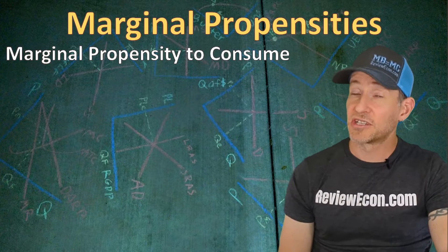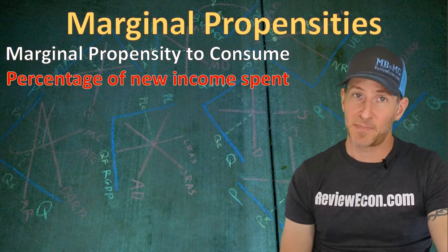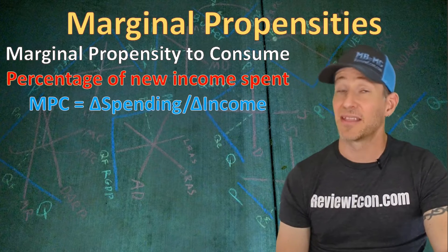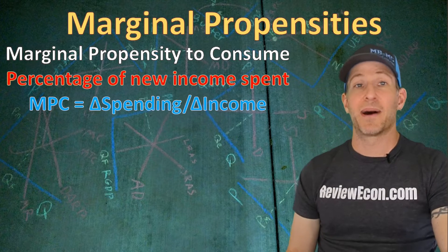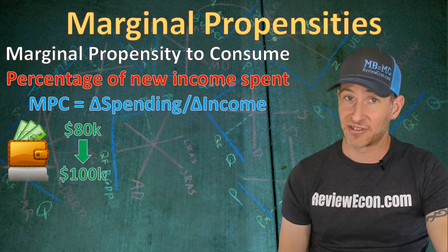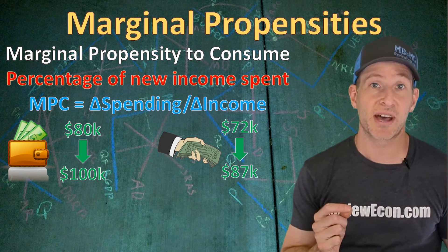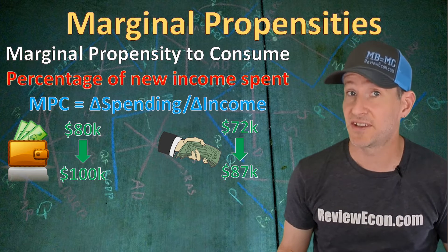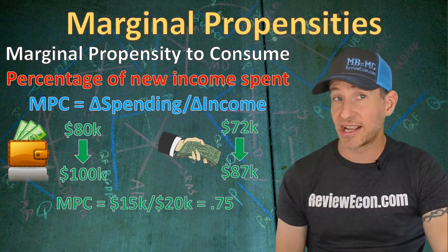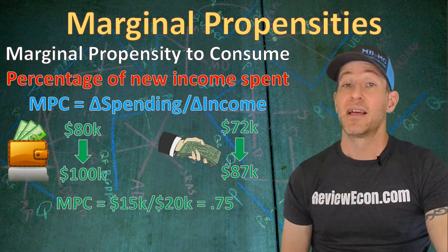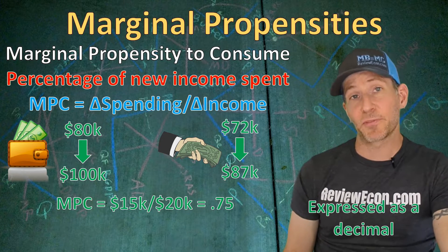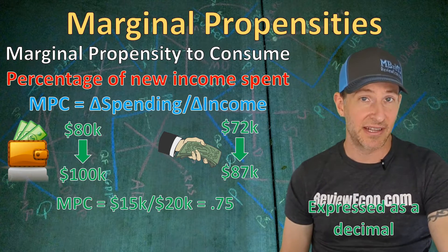The marginal propensity to consume is the percentage of new income that is spent rather than saved. The formula is the change in spending divided by the change in income. So if my income increases from $80,000 up to $100,000 — a change of $20,000 — and my spending increases from $72,000 up to $87,000, that's an increase of $15,000. My marginal propensity to consume would be $15,000 divided by $20,000, which is 0.75 — meaning 75% of my increase in income was spent.